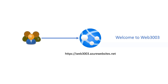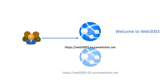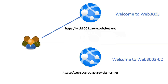When users are accessing this web app URL they can see the web page 'Welcome to web3003'. Now there's a requirement to deploy a new web page, but we don't want to overwrite it on the same existing web app in the production environment. What we can do is create a deployment slot within the same web app — we can either clone content from the first web app or deploy a new application on the new deployment slot.